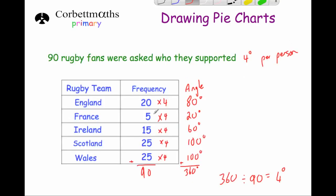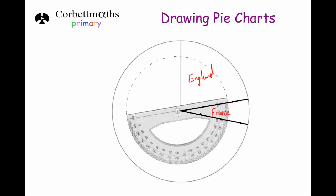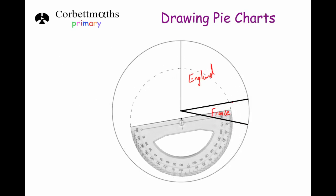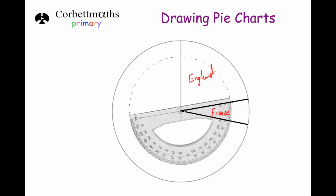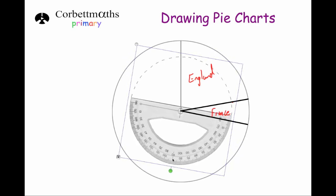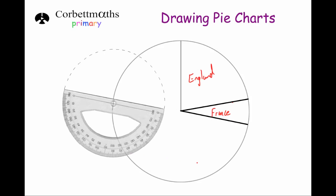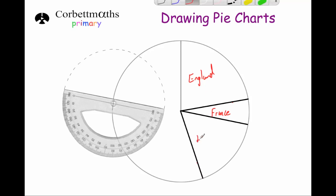The next region is for Ireland and that's 60 degrees. Get the protractor and put the centre on the centre of the pie chart. Rotate the zero to line up with the line we've just drawn. We're drawing a 60 degree angle for Ireland, so go from zero around to 60 degrees. Move the protractor, get a ruler and draw a line from the centre of the circle through that point to the edge. Label that section Ireland.